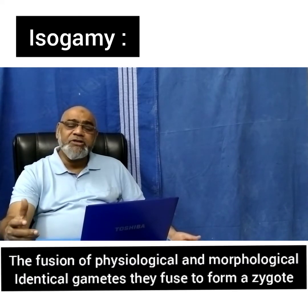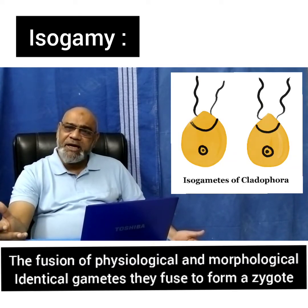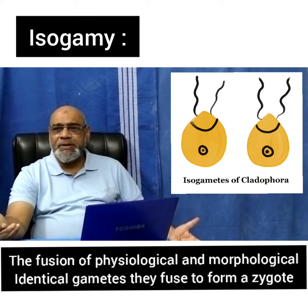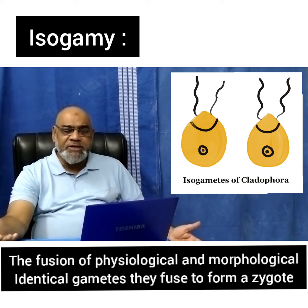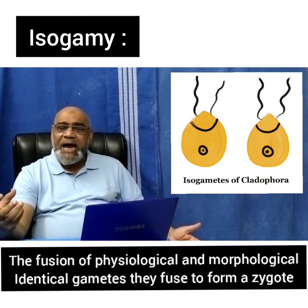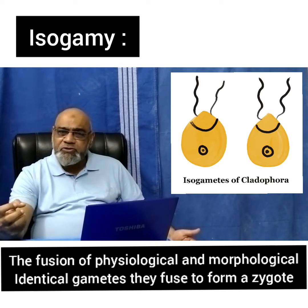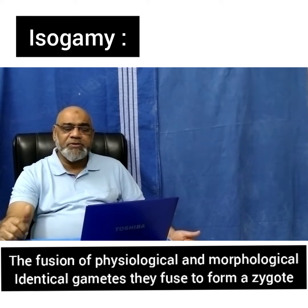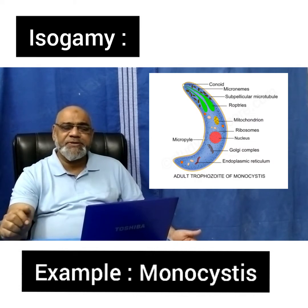What is isogamy? Iso means same. Here the physiologically and morphologically identical gametes fuse to form the zygote. An example is Monocystis.